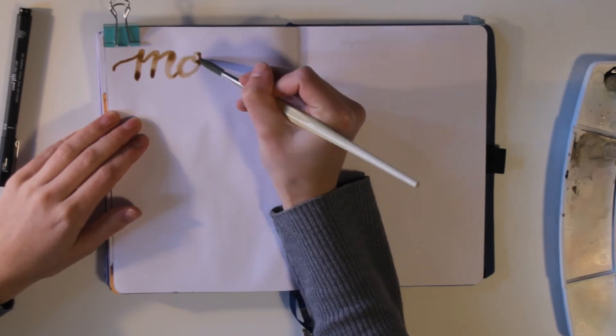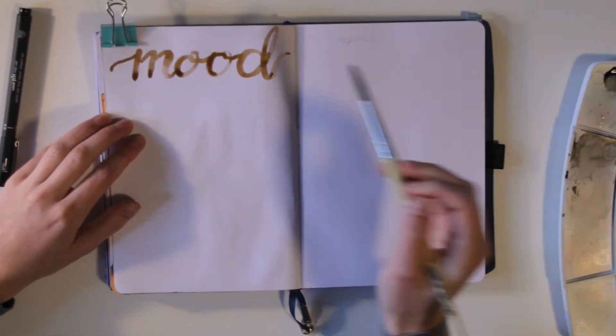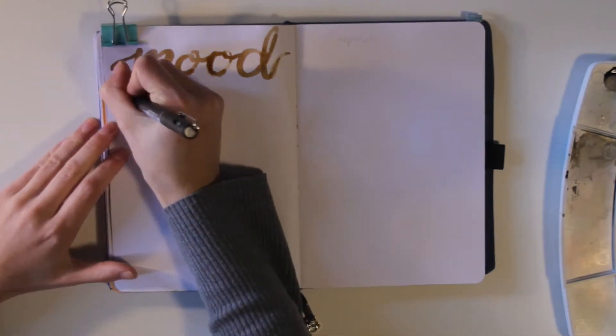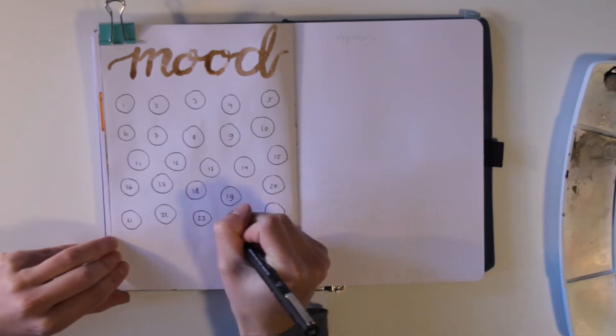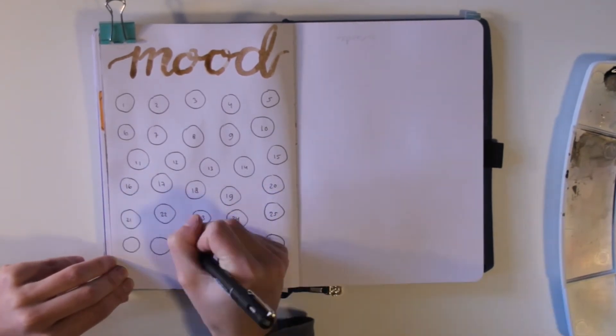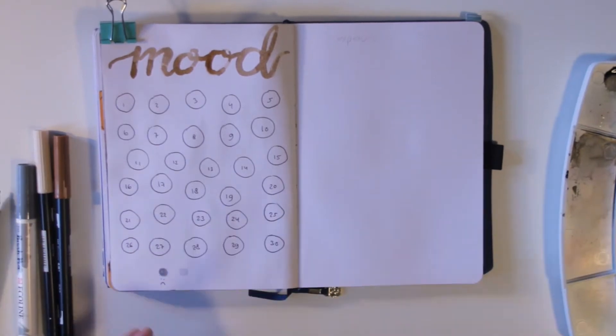So on to the next page and it's going to be my mood tracker. So I just wrote out this title using the same watercolors. And I'm just going to keep it very simple, just use these circles and I'm going to color these in according to my mood. As I always do basically.